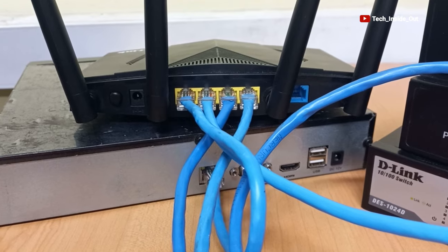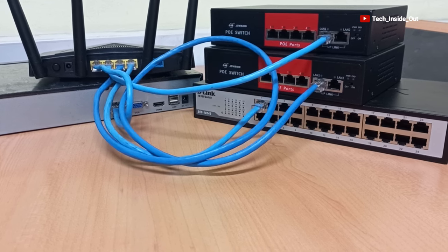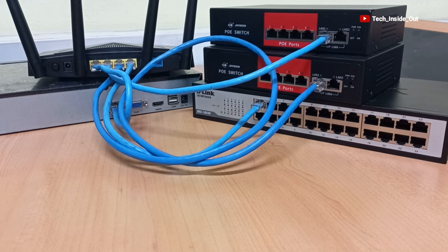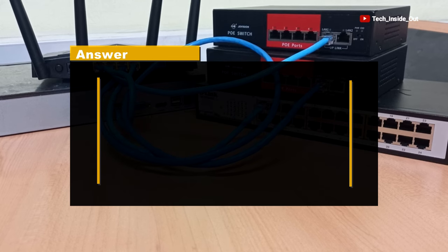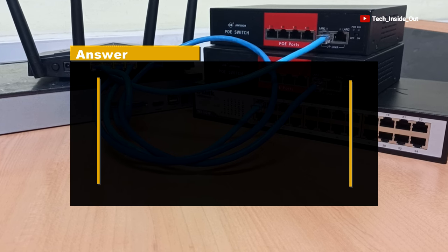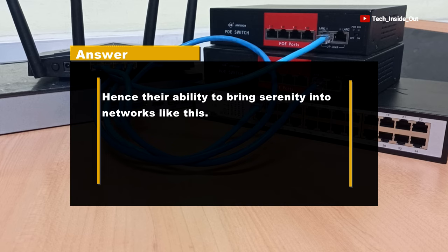The router then directs the outputs from all the switches into the NVR. This is a much more fluid and very efficient kind of network compared to the earlier daisy-chain network. The question someone may ask is: given the same connection structure, can a switch be used to replace the router and still deliver the same results? The answer is an emphatic no — because routers are designed to serve as gateways and are purposefully built with the ability to manage network traffic, hence their ability to bring stability into networks of this nature.